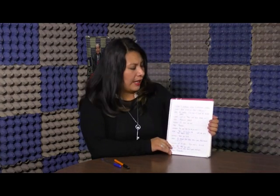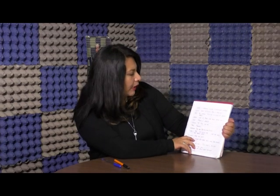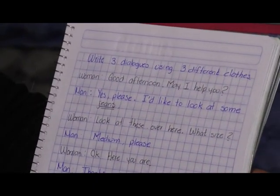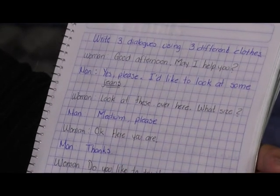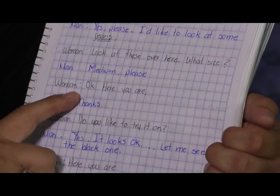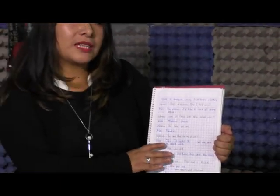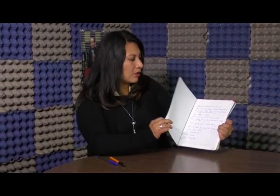Posteriormente, para poder realizar nuestro proyecto, vamos a hacer un diálogo en donde nosotros solicitemos la compra de una prenda de vestir. Puse aquí un ejemplo. Esta conversación la tomé de su libro de texto en la página 19. Ustedes pueden guiarse y hacer la conversación. La pueden modificar de tal manera que les quede más larga o más corta. Eso ya depende de qué tan larga la quieran realizar.